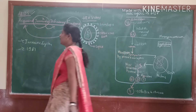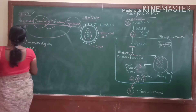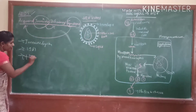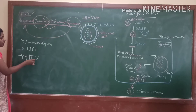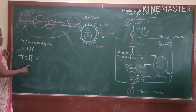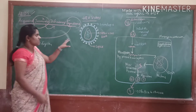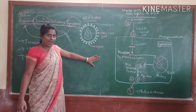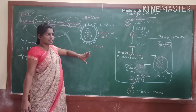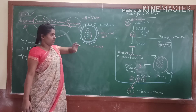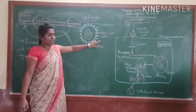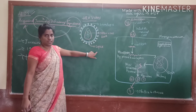AIDS is caused by one virus. That virus is nothing but HIV — Human Immunodeficiency Virus. These are the structures of this retrovirus. This retrovirus mainly consists of three materials: envelope, genetic material, and capsid. These envelopes are mainly made up of protein.